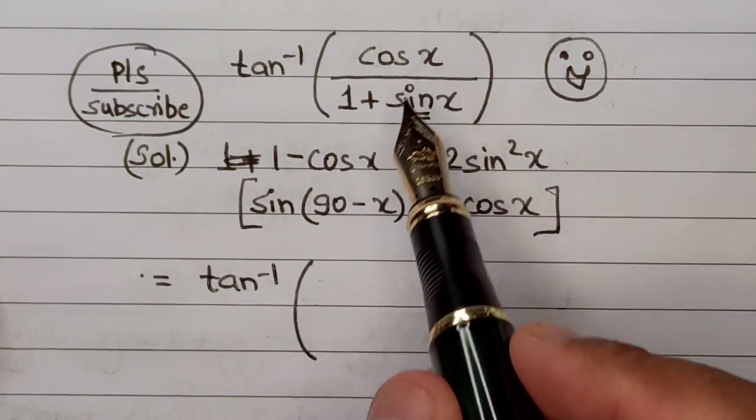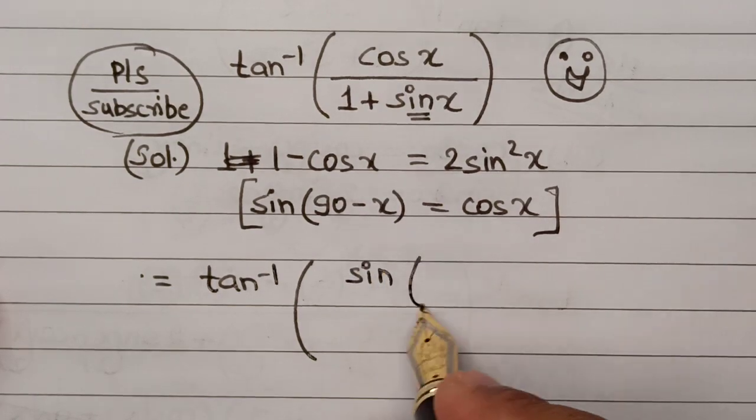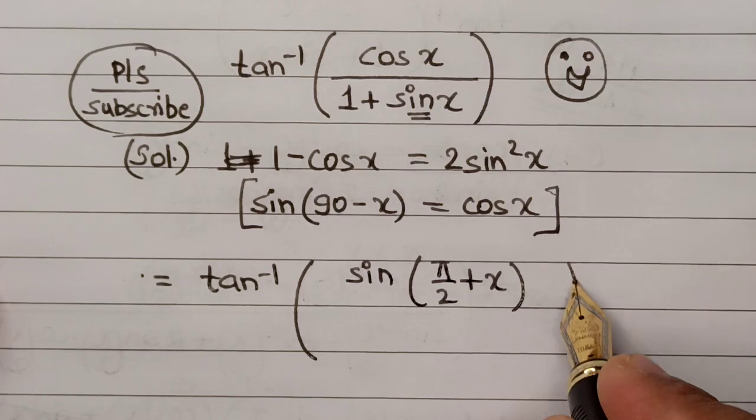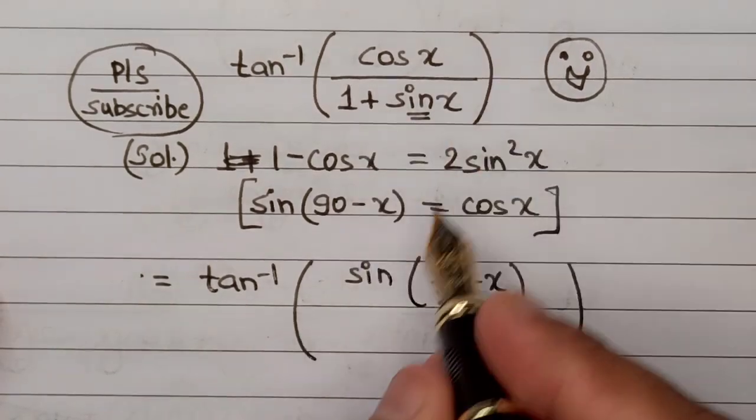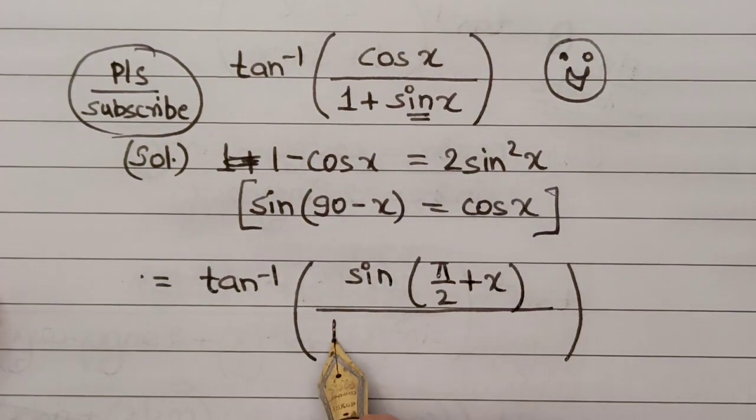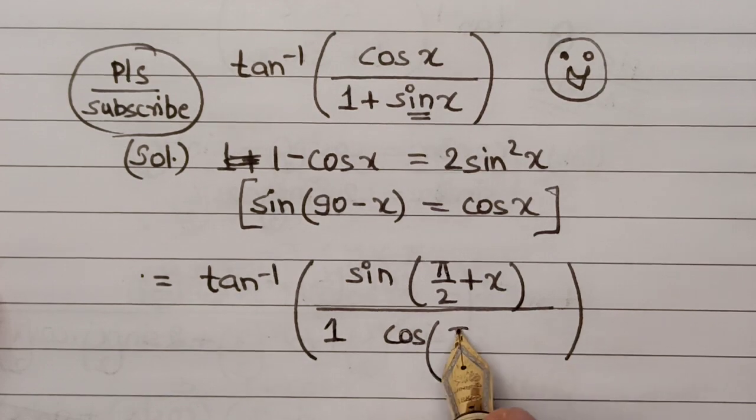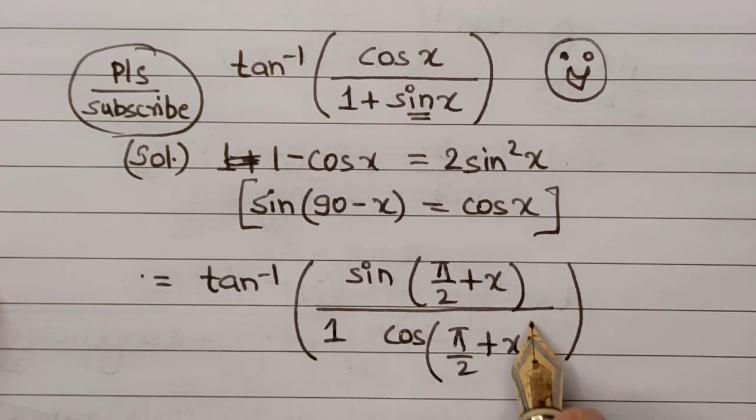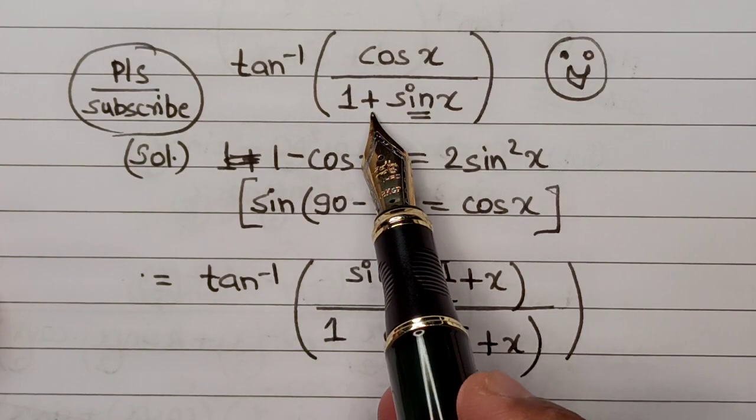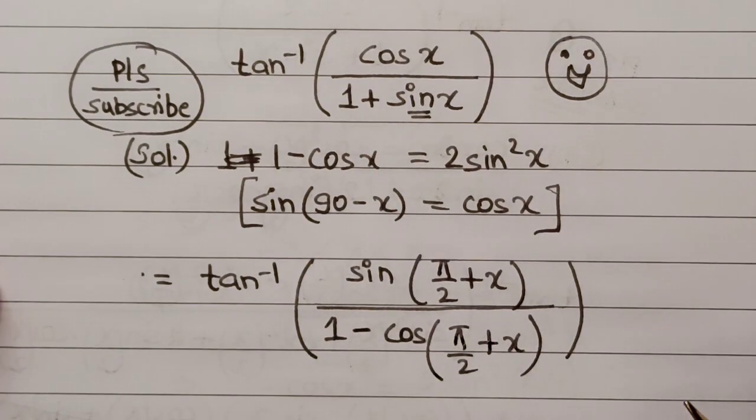Here we have cos x, so in place of cos x I can simply write sine of pi by 2 plus x. This gives me the overall value of cos x. Similarly, this sine x here can be represented as cos of—now if I make this as pi by 2 plus x it will generate a negative value, but in the question it is positive in nature, so I'll have to adjust this with another negative sign here.